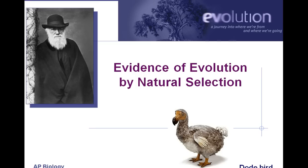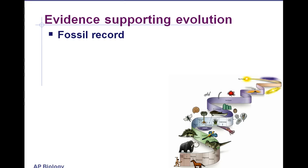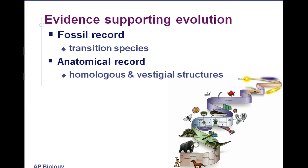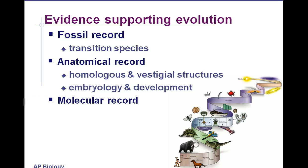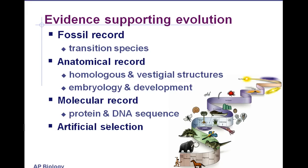We've already taken some notes on artificial selection. Now we're going to go into the fossil record. After that, we'll talk about the anatomical record — the similarities and differences we see between different species and how to interpret them. We're also going to look into embryological development and the similarities between closely related species or species with a shared common ancestor and the stages they go through in development. We'll be talking about DNA later on, and we've already gone through artificial selection.